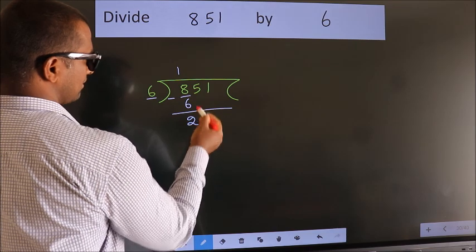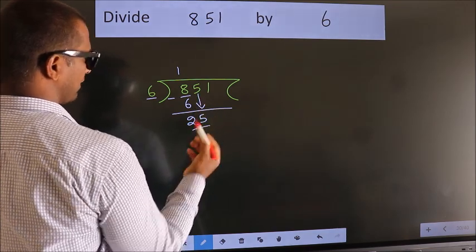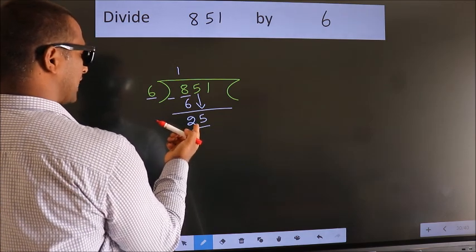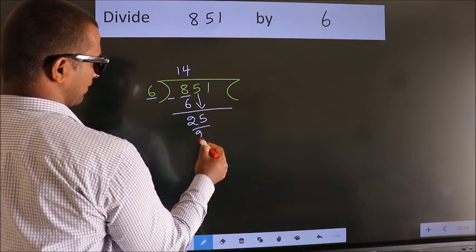After this, bring down the beside number. So, 5 down. So, 25. A number close to 25 in the 6 table is 6 times 4 equals 24.